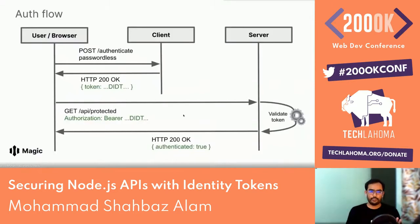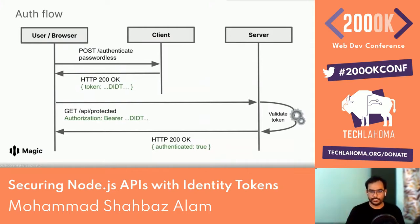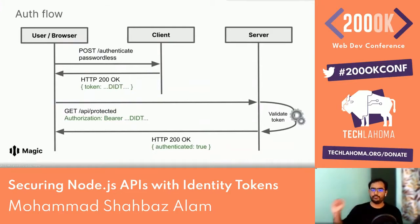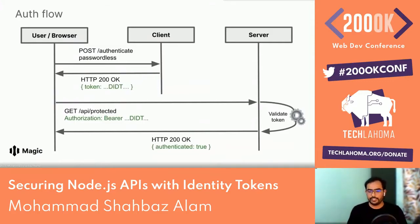Here's how the auth flow looks: at the browser level, the user authenticates using a passwordless option. The client returns a DID token. The user then tries to access a protected route — which is what this talk is about — building a node API and protecting those APIs. The DID token is passed in the authorization header to the server. At the server, we validate that DID token using the Magic SDK, and once validated, it's authenticated and the next route is allowed.